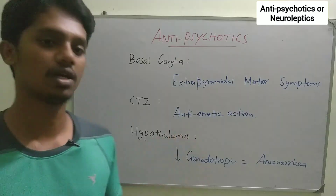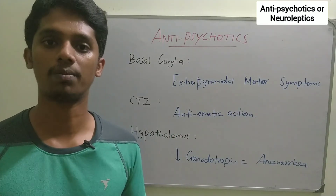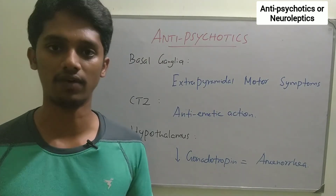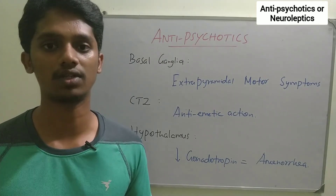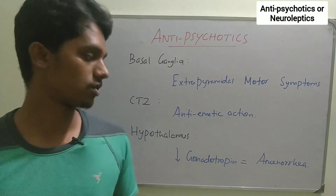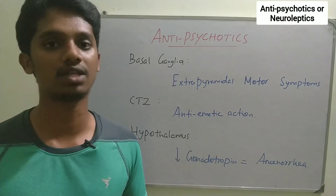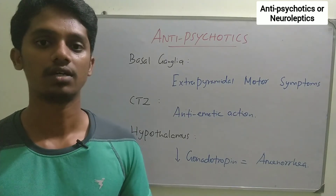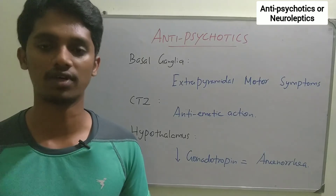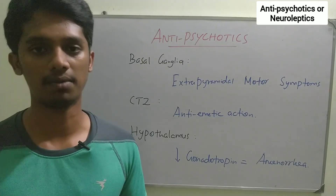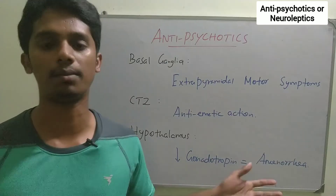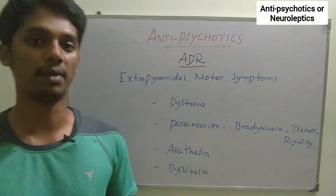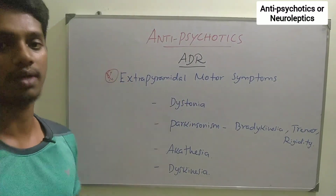Next is the hypothalamus. The drug affects the secretion of gonadotropin hormones. Some hormones will be reduced, which can lead to hormonal changes. This is very important.